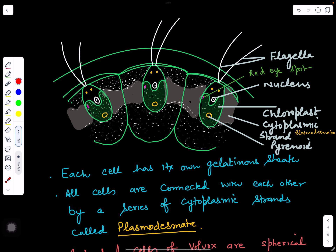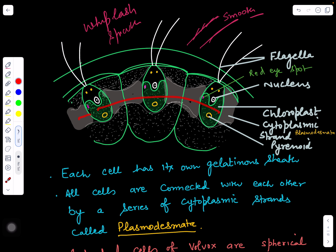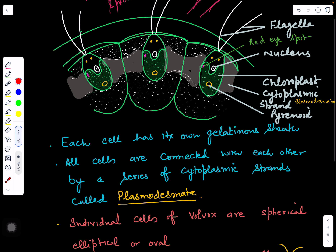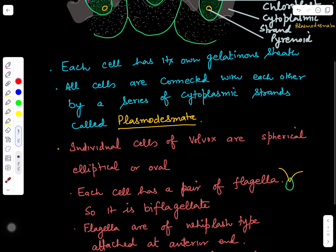Inside the Volvox colony, mucilage is present in which cells are embedded. Each cell has two flagella; the flagella type is whiplash type, which is smooth. All the cells are connected with each other by a series of cytoplasmic strands called plasmodesmata connections. The shape of each cell can be spherical or oval.